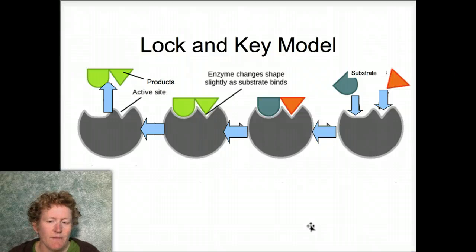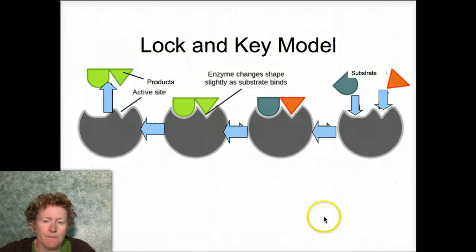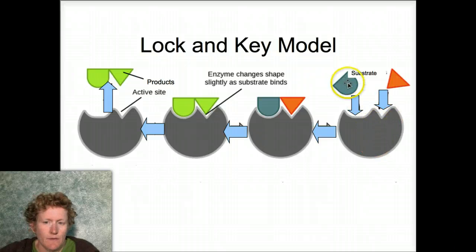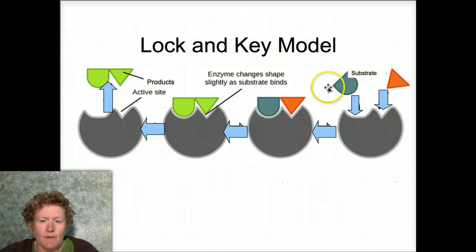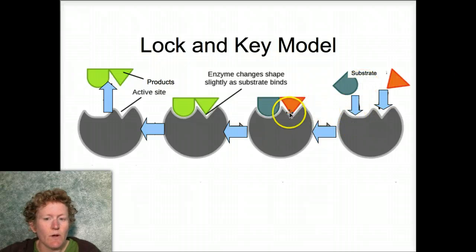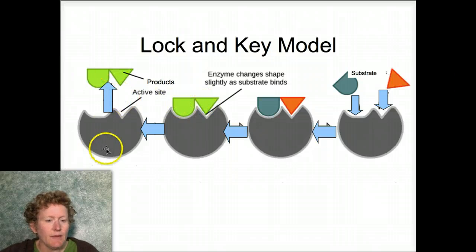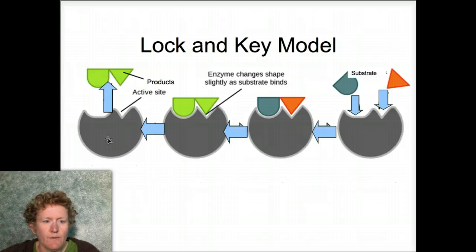Some people think of it as a lock-and-key model. The compounds come into the enzyme, the enzyme changes shape to hold onto them, it makes the bond happen, a new compound leaves, and the enzyme is ready for another round.